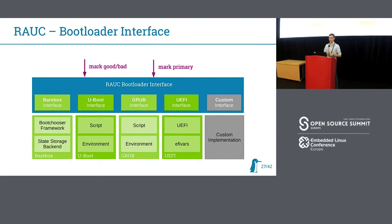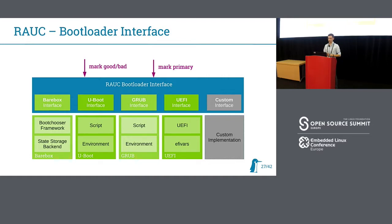We currently support Barebox, U-Boot, GRUB, and UEFI. This boils down to interfacing with the bootloader's storage — for example, an environment in GRUB or U-Boot, or the Barebox state framework, or simply EFI vars in UEFI. In each of these bootloaders, either there's predefined logic for slot selection, or you have to do scripting as required for GRUB or U-Boot. RAUC uses the userspace tools provided by the bootloaders: barebox-state for Barebox, fw_printenv for U-Boot, or grub-editenv for GRUB, and so on.